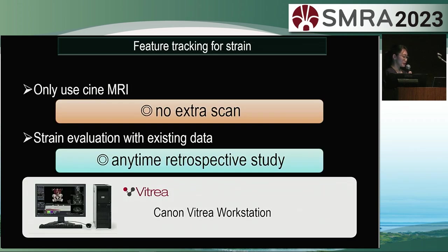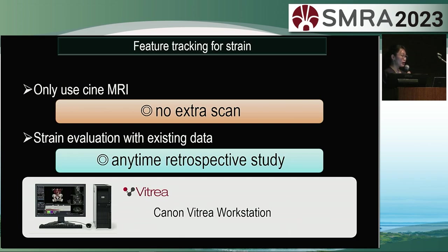Previously, strain evaluation required forward planning and additional specialized imaging which extended the examination duration. In response to the demand for performing strain analysis retrospectively using existing data, in the left ventricle, the feature tracking method has emerged. By utilizing Canon's Vitoria workstation, it is possible to perform additional analysis with non-contrast cine MRI.